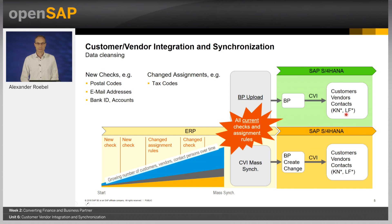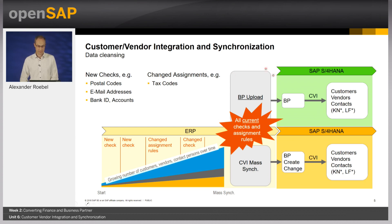Data cleansing is one of the major tasks to prepare for activation of CVI. At some point in the past you will have started with consistent master data — consistent at that time. Over time, new master data is continuously added, which could lead to errors or mistakes. In addition, new checking rules were implemented or existing rules were changed. These changed rules apply to new or recently changed master data objects only. Now, when we start a full synchronization of all customers, vendors, and contact persons, all currently valid rules apply to the full data set. This also happens when data is being migrated.